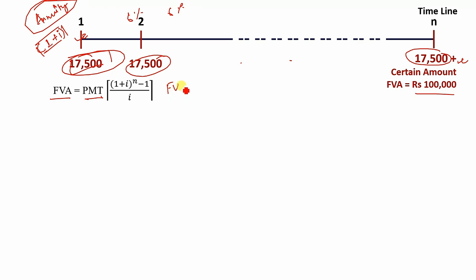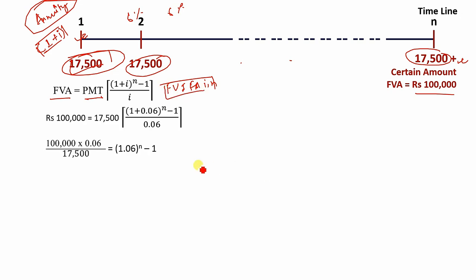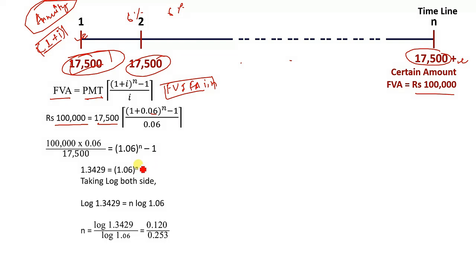Future Value Interest Factor of annuity is equal to N. The value put is equal to 1,000,000. The interest rate is 6%. If you are interested, the value is 1.3429 plus 1.06 power N.